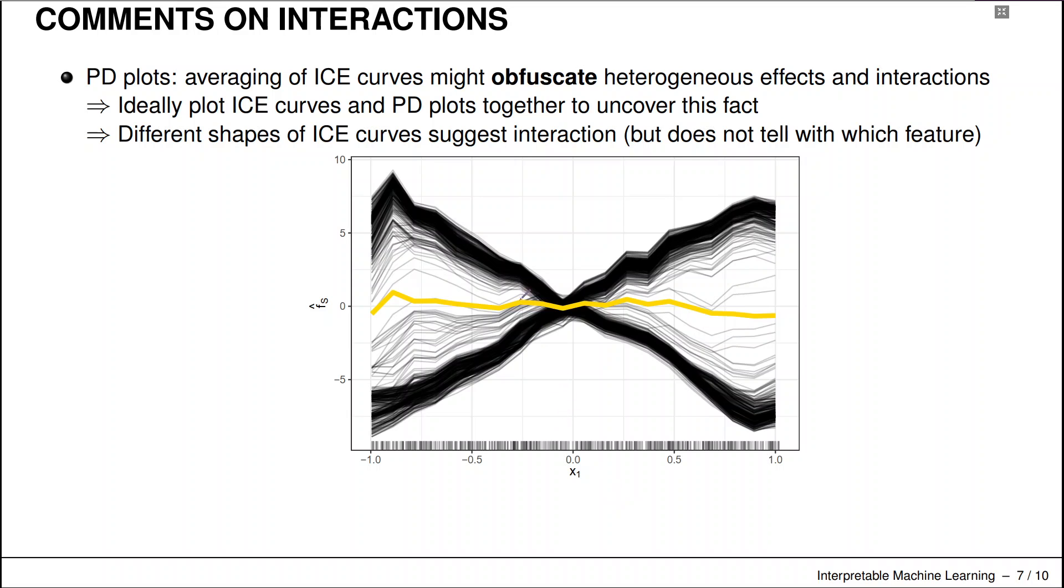And now suppose there's something like a different effect going on for males and females. So maybe for males, there's a positive effect. And for females, there's a negative effect. And you can in this simple case directly read that off from the structure of the ICE curves. But if we now average over them and only plot the PDP plot, that might give rise to the interpretation that there is no effect at all in the data, which is completely wrong, right?